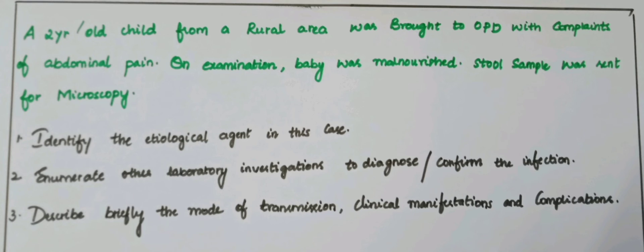Complications: intestinal — bowel obstruction, volvulus, and perforation. Extra-intestinal — biliary obstruction leading to biliary colic, cholecystitis, pancreatitis, and respiratory obstruction by wandering worms. Thank you.